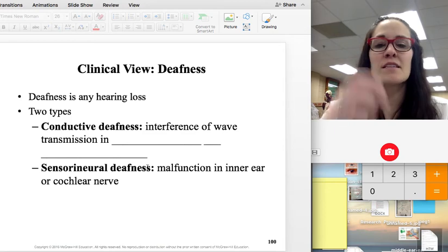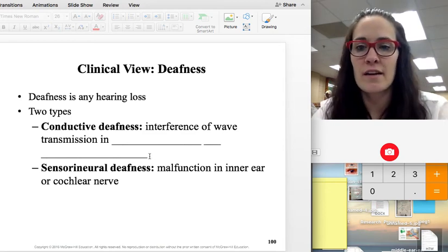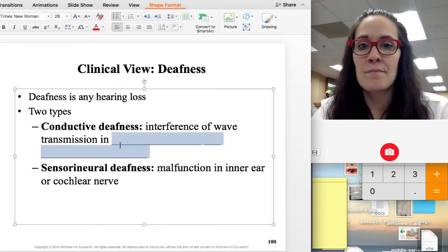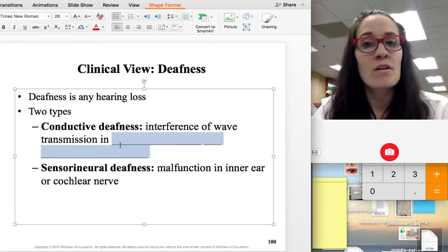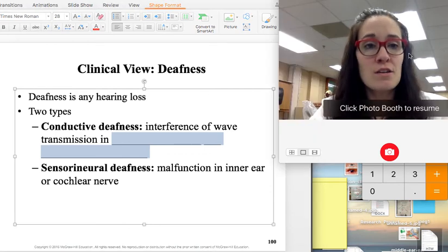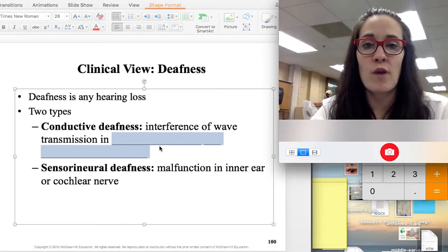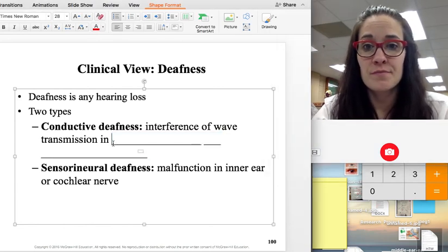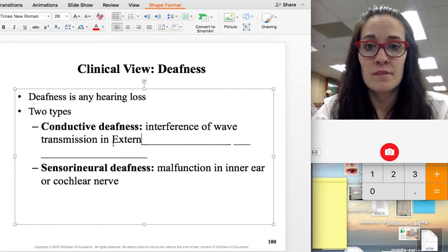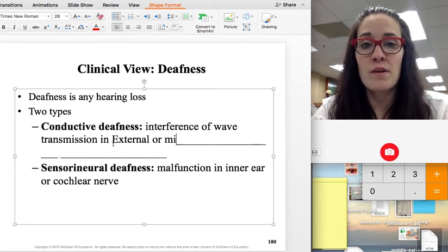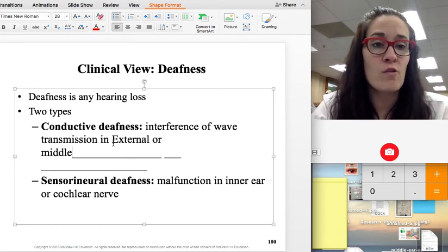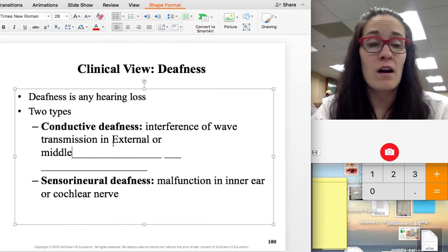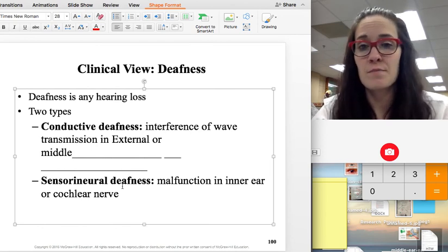Deafness is considered any hearing loss. There's two different categories. Conductive deafness is when there's some kind of interference of wave transmission somewhere in the external ear or the middle ear. So it could be earwax. That could cause conductive deafness temporarily.